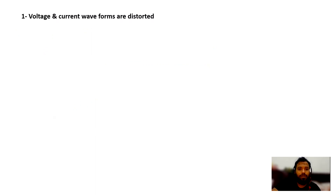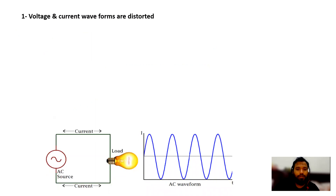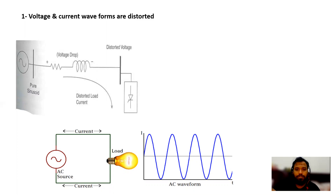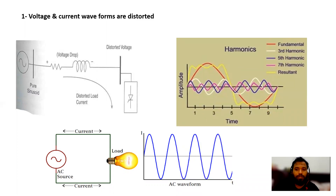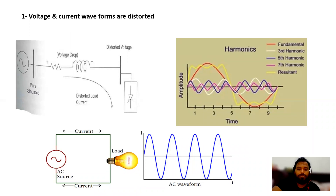First: voltage and current waveforms are distorted. In normal linear loads the waveform is a sine waveform — it will not cause any voltage and current wave distortion, going from 0 to 360 degrees. Whereas due to non-linear loads our voltage is distorted, because of the presence of harmonics such as the third, fifth, and seventh. See in this picture the distorted voltage and current waveforms.